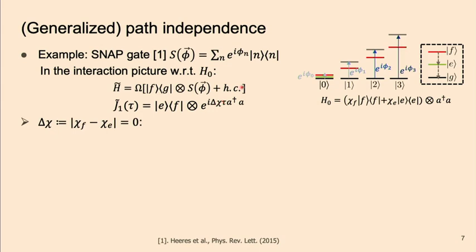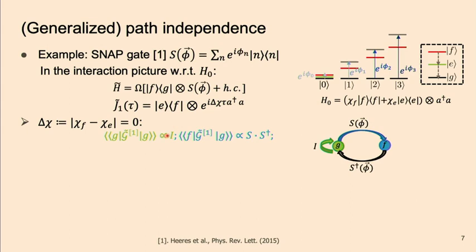What matters is that if you have perfect chi matching — meaning chi_F and chi_E, the dispersive coupling strengths, are matched for the F and E levels — then this operator becomes time-independent. If you calculate this conditional channel: if the qubit starts from the G state and ends in the G state, you know that nothing was applied to the cavity — it's the identity channel. If the ancilla ends in the F state, you know that you successfully implemented the SNAP gate. And naturally, even if a single ancilla decay happens — the ancilla decays from F to E and you obtain the E measurement outcome — the system still undergoes the designed unitary, because you can compose the two paths and still get the S unitary. That's the idea of path independence.